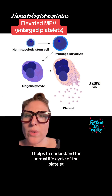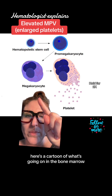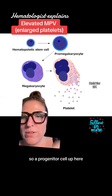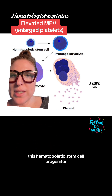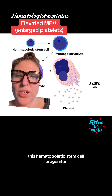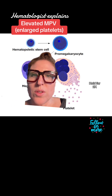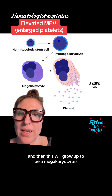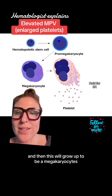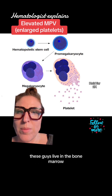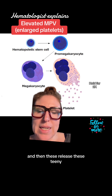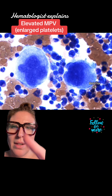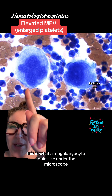Here's a cartoon of what's going on in the bone marrow. A progenitor cell — a hematopoietic stem cell progenitor — will differentiate into a pro-megakaryocyte, and then this will grow up to be a megakaryocyte. These cells live in the bone marrow and release tiny platelets.